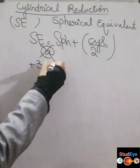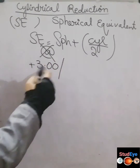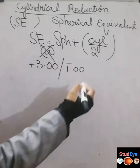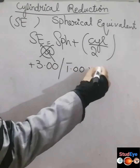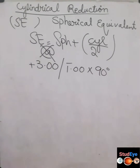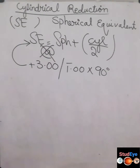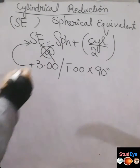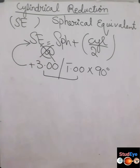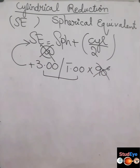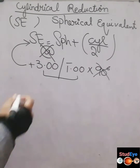Here we have a prescription of plus three sphere and minus one cylinder at an axis of 90 degrees. To find the spherical equivalent of this prescription, you add the sphere to half of the cylinder, neglecting the axis.